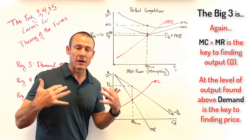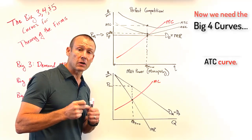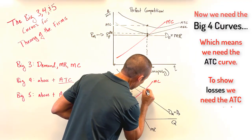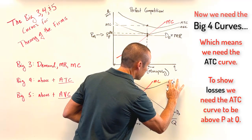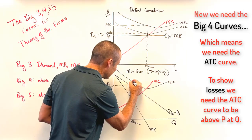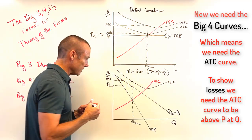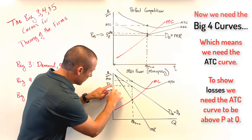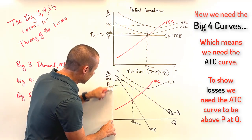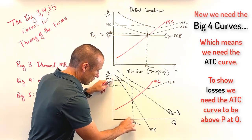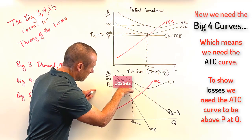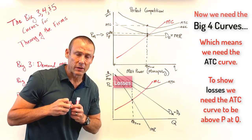Now say we're asked to show losses for the market power case. I need to make sure ATC is above price at this level of output. I'll draw ATC downward sloping to MC, then upward sloping — making sure that at Q, ATC is above P. The vertical distance from P up to ATC, times Q, gives the loss rectangle. That rectangle — price out to Q, up to ATC and back — represents the losses if the firm operates.